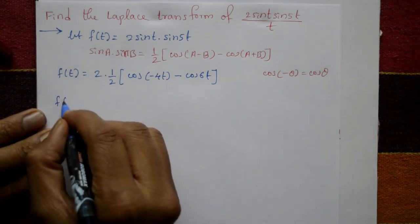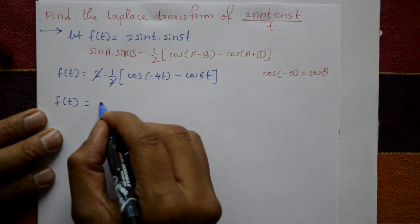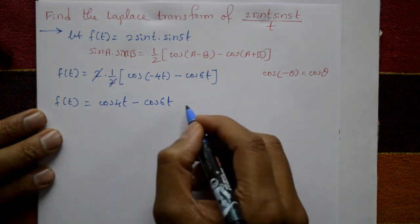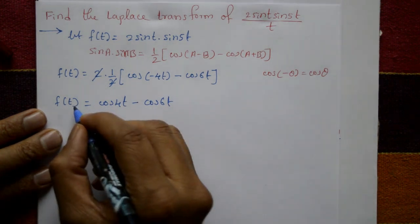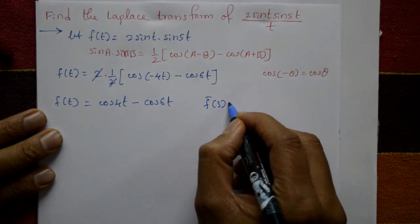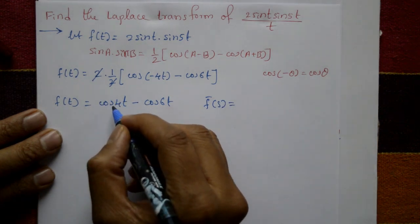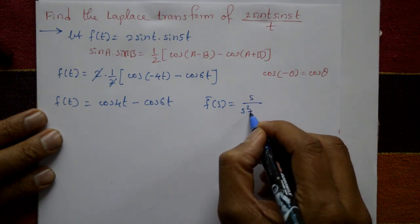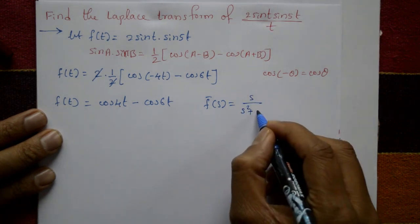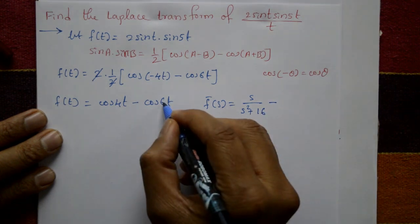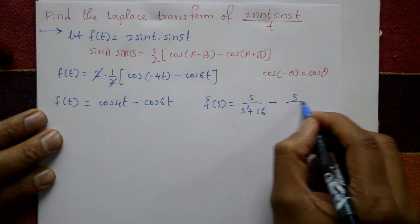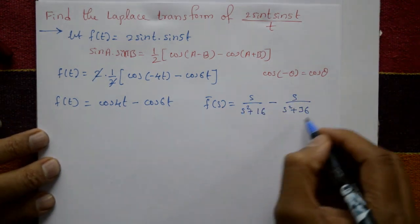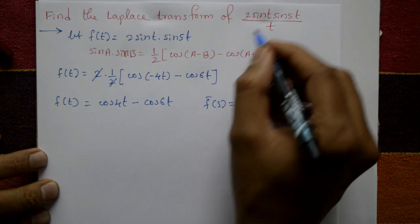So f(t) equals cos(4t) minus cos(6t). Now applying the Laplace transform on both sides: F̄(s) equals the Laplace of cos(4t) which is s over (s² plus 16), minus the Laplace of cos(6t) which is s over (s² plus 36). This is F̄(s).